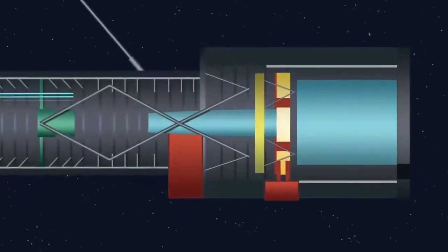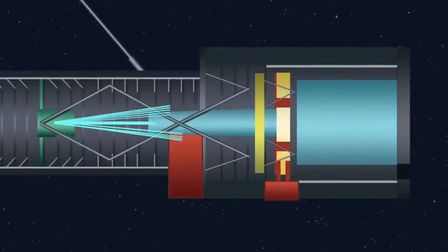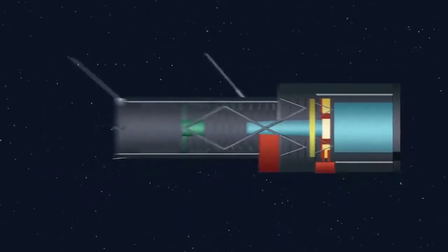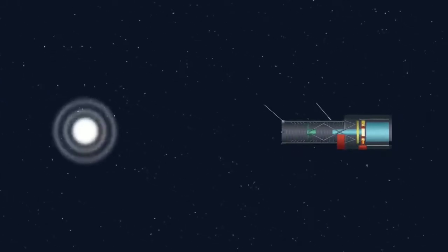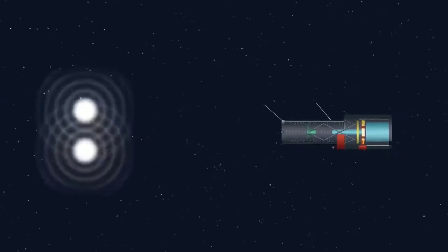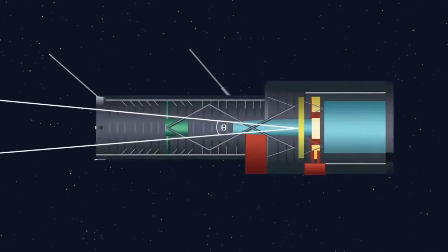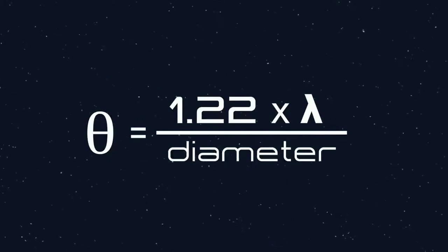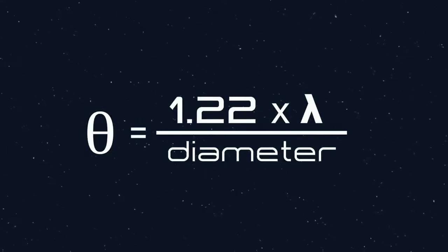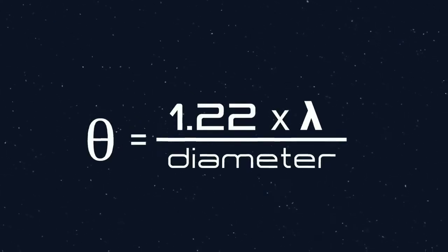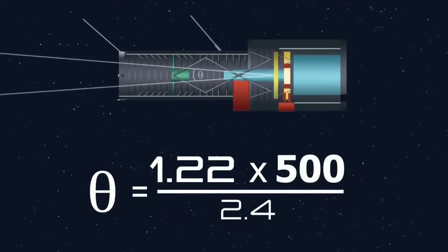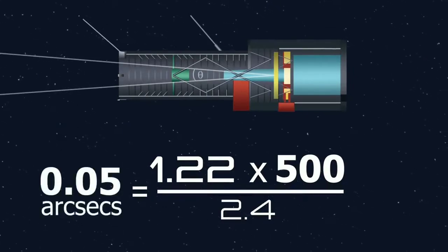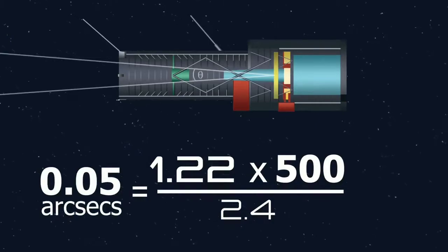The resolution of a telescope is limited to the number of wavelengths it can fit across its mirror. The angular resolution of a telescope measures its ability to identify two separate objects that have a short angular distance when observed by a telescope. This is given by 1.22 multiplied by the wavelength of the light over the diameter of the mirror. When observing visible light of about 500 nanometers, Hubble has an angular resolution of about 0.05 arc seconds. This beats the human eye's resolution by a factor of 1,000.